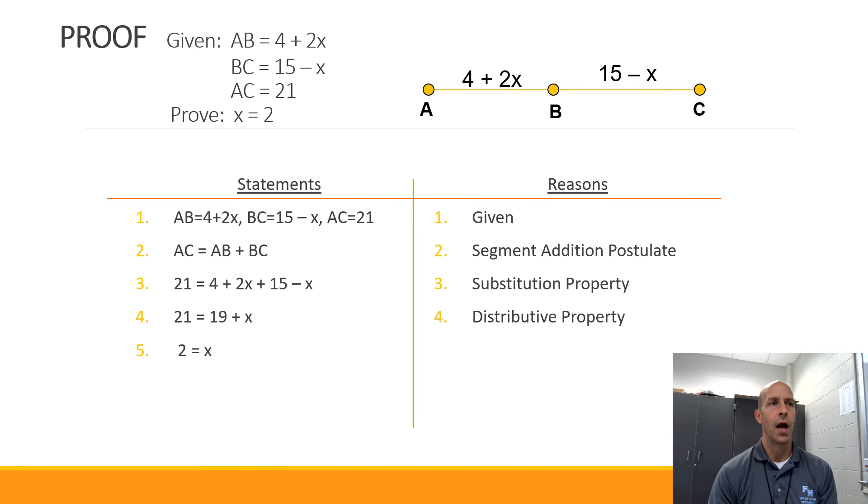Step 5, I'm going to subtract 19 over, or actually I'm subtracting 19 on both sides of the equation. That is the subtraction property of equality. And then last but not least, I'm going to take the 2 and the x, and I'm going to switch those around, and that's something called the symmetric property. So we have proven our statement in a two-column proof.